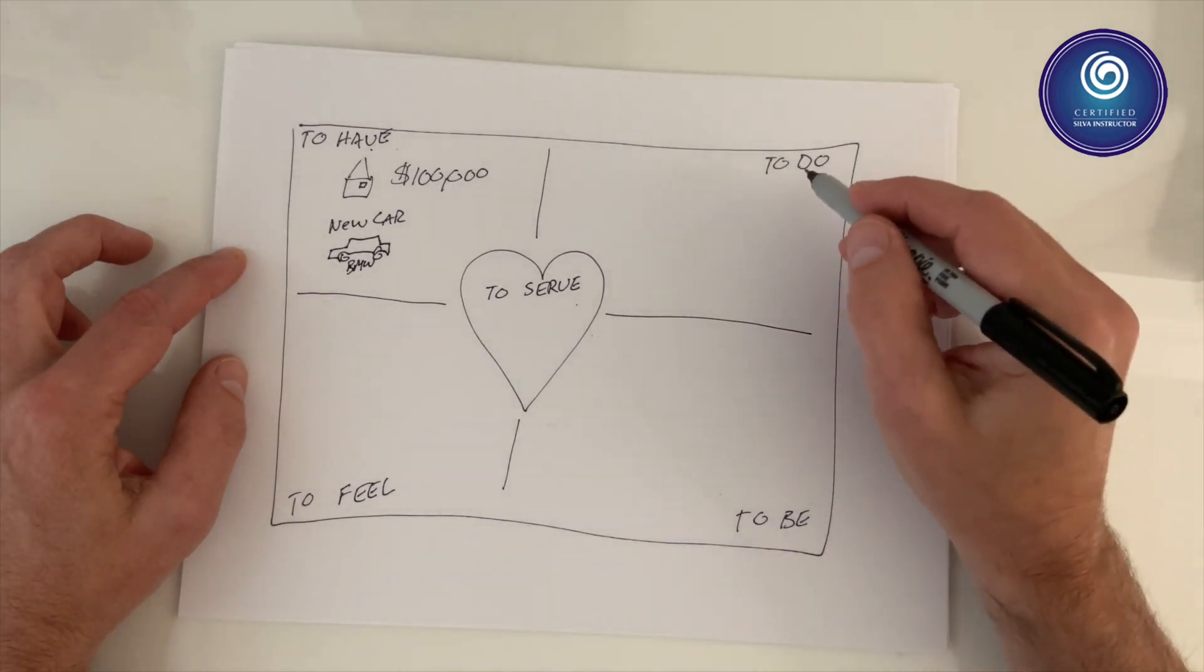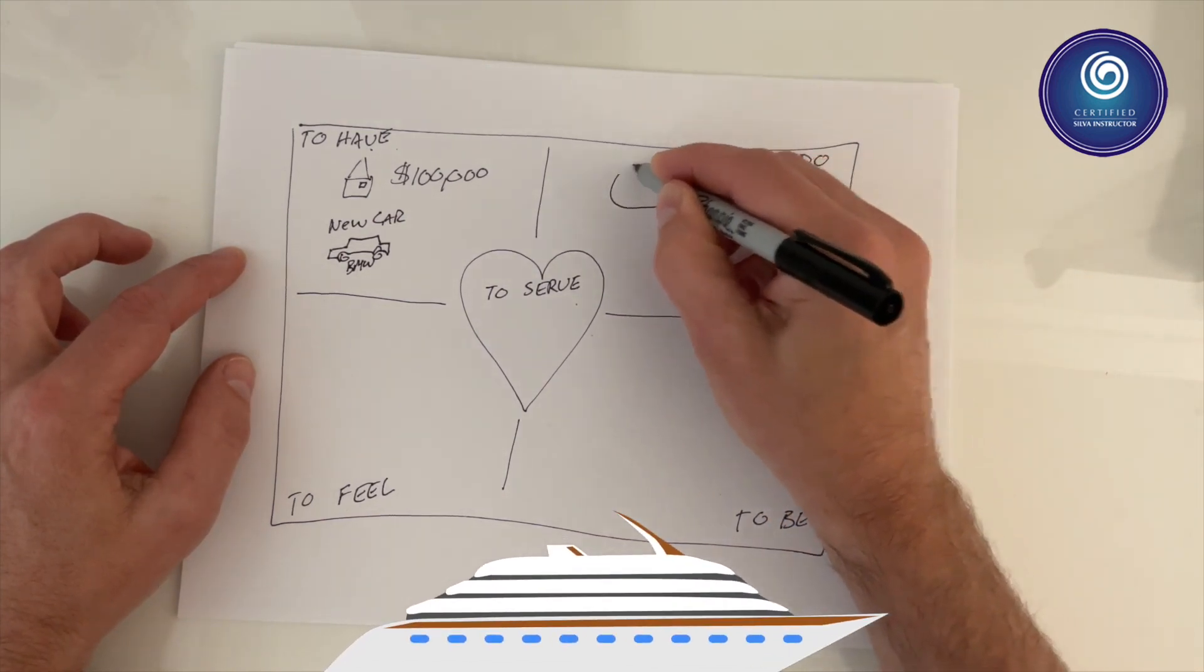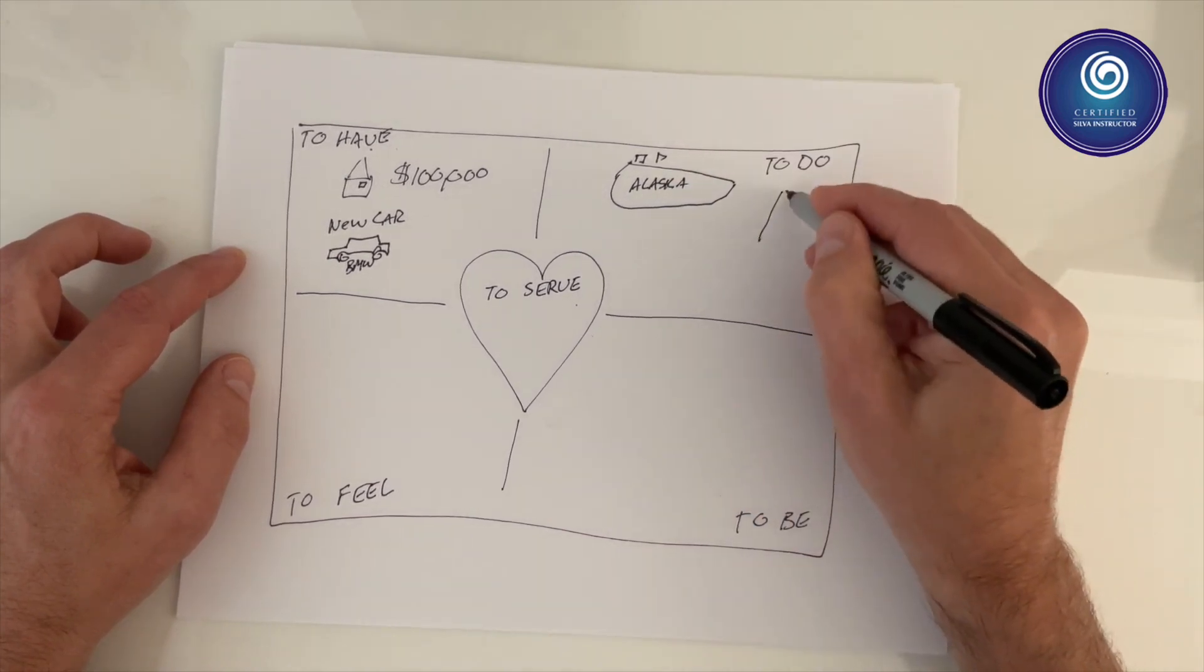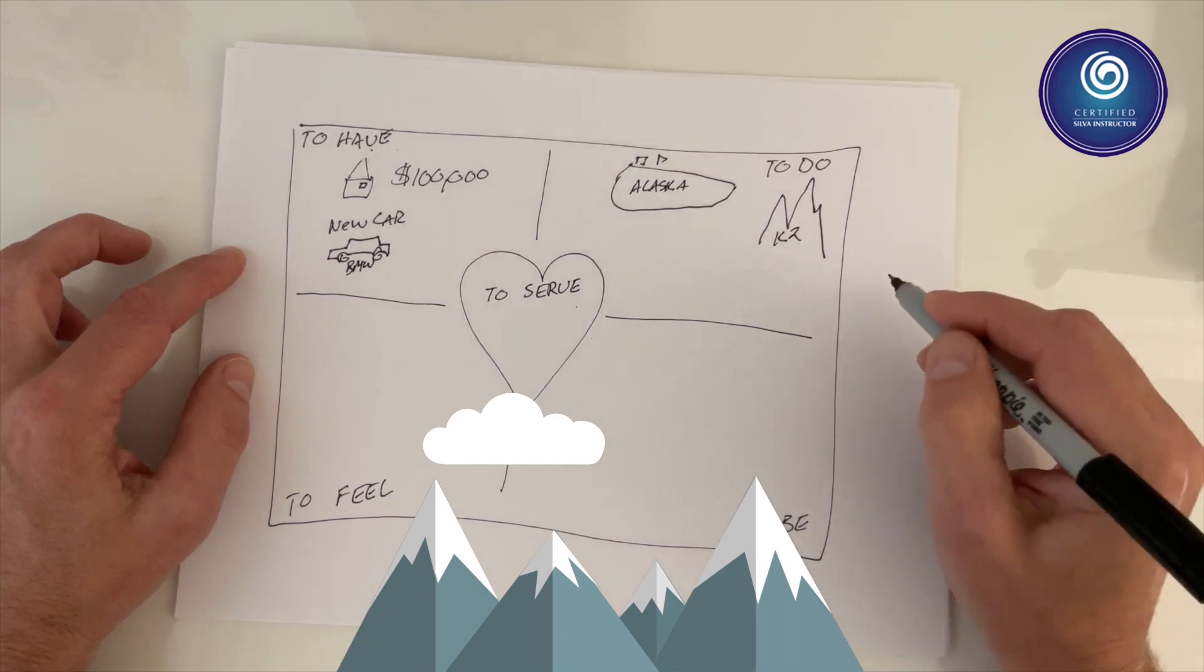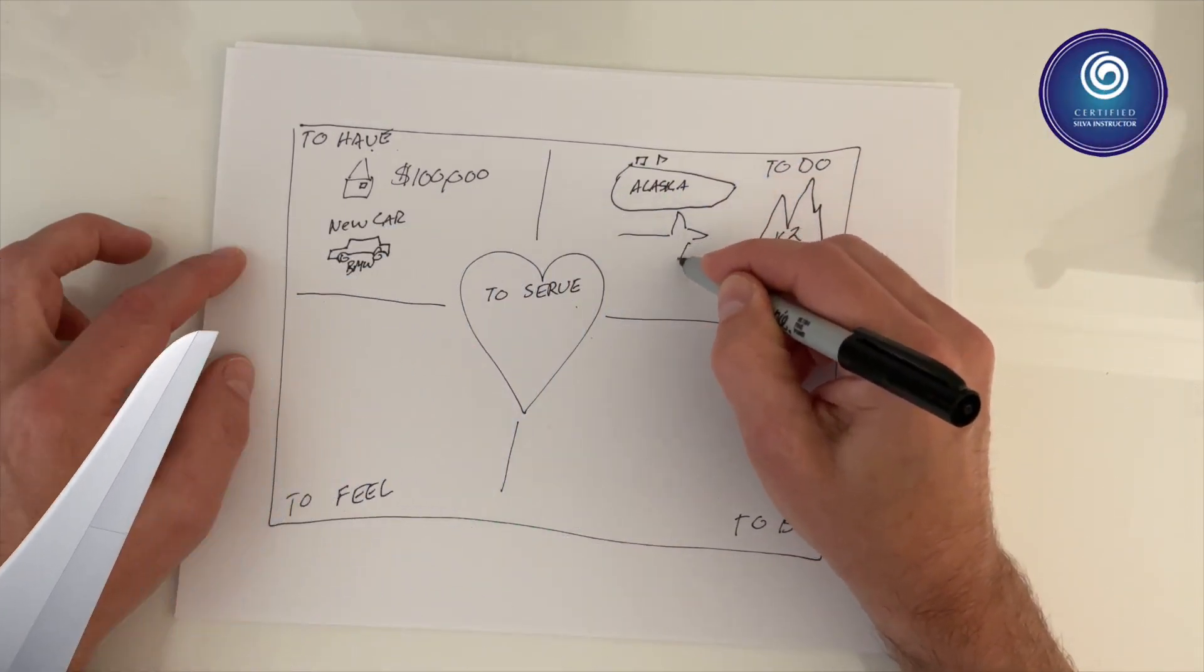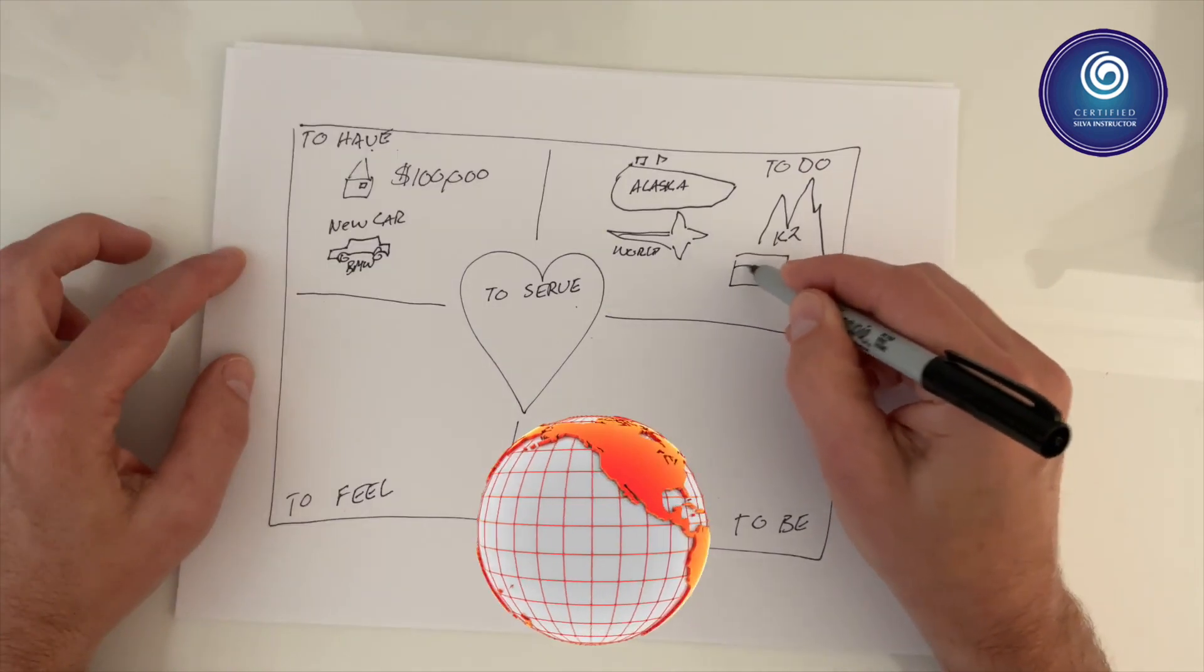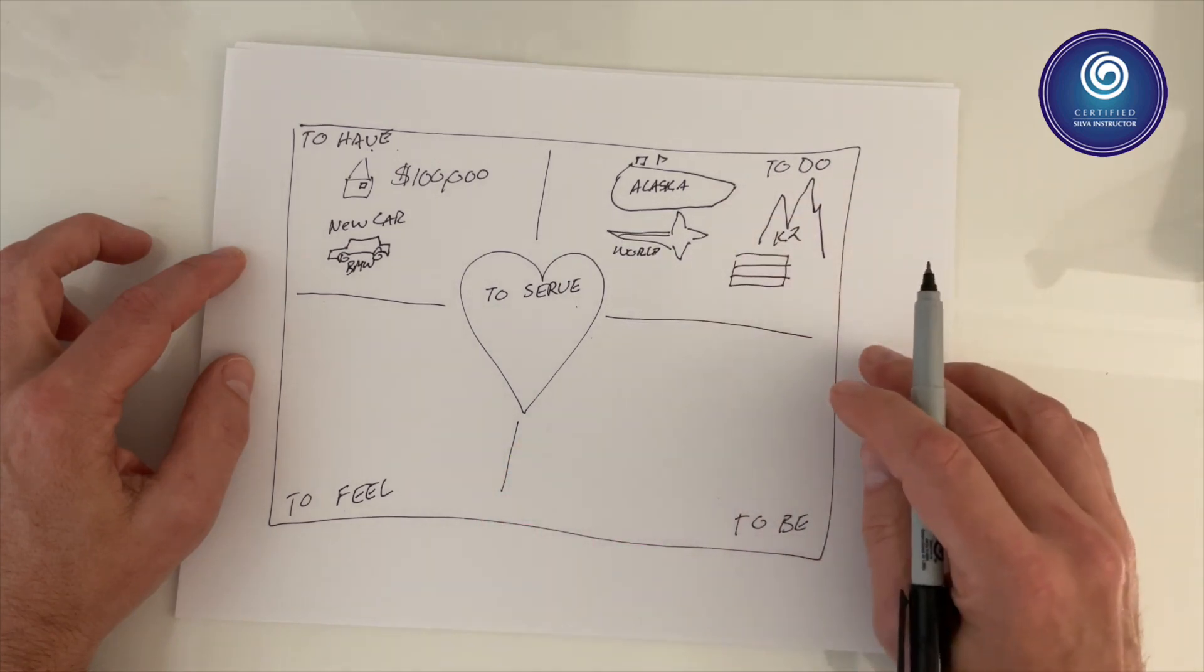To the right, the top right corner, the things that you want to do. You want to, let's say, travel on a ship cruise line - you can put on there Alaska. Perhaps you want to climb a mountain, K2. Perhaps you want to fly or travel around the world. Perhaps there's a specific country you want to go to - you can draw its flag. So write down and draw all the things that you want to do.